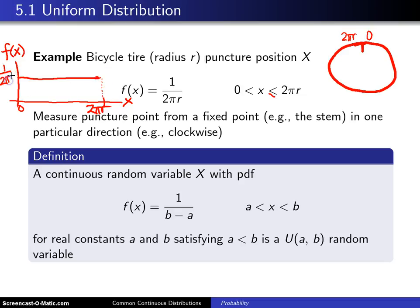And that distribution right there will have height 1 over 2πR. Why does the height have to be 1 over 2πR? Well, the reason is you've got to have an area underneath the probability density function of 1. And 2πR multiplied by 1 over 2πR, that's 1. Don't even need calculus here, because this is just simply a rectangle.